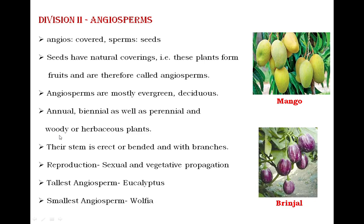Angiosperms are woody or herbaceous stem-bearing plants. Woody means having a hard nature, and herbaceous means fleshy, green, and somewhat watery. Both types of stems are found in angiospermic plants. In gymnosperms the stem is erect only, but in angiosperms the stem may be erect or bent, and it is with branches — unlike gymnosperms where the stem is without branches.